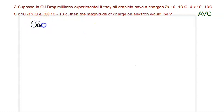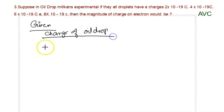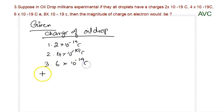Given the values of various charges, the charge of oil droplets in Millikan's experiment: 1 is 2 × 10^-19, 2 is 4 × 10^-19 coulombs, 3 is 6 × 10^-19 coulombs, and the 4th one is 8 × 10^-19 coulombs.